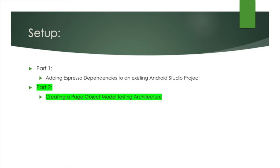In part one of our series we went over how to add Espresso dependencies to an existing Android Studio project so that we could use Espresso for our testing. In part two we're going to go over how to create a page object model testing architecture using those Espresso dependencies.